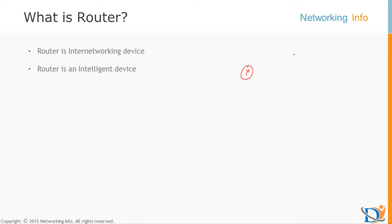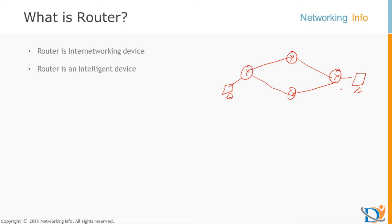For example, I have one router, one more router, one more router, and one more router in a scenario. Here is my source PC and here is my destination. I am going to send a packet from source to destination. The router is going to decide which path is better for the destination. It will automatically decide based on what we configured — whatever we tell the router, it sends the packet via this link or that link. The router takes its decision based on a kind of calculation it automatically does. That's the beauty of the router.